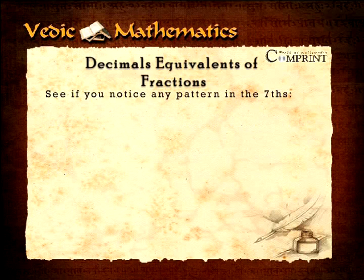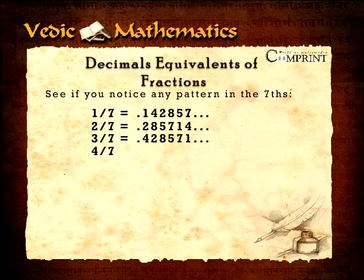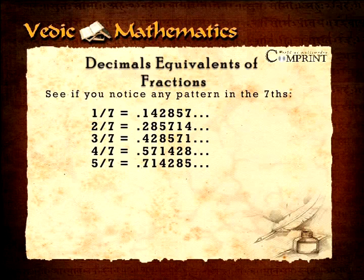See if you notice any pattern in the sevenths. One by seven equals 0.142857. Two by seven equals 0.285714. Three by seven equaling 0.428571. Four by seven equaling 0.571428, and so on. Five by seven equaling 0.714285, and six by seven equaling 0.857142, and so on.